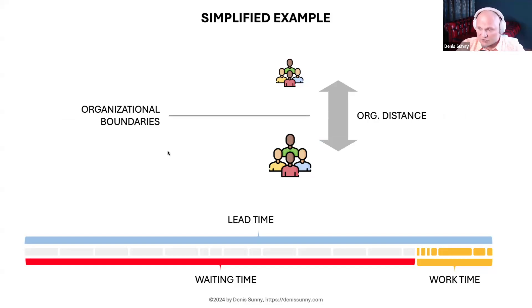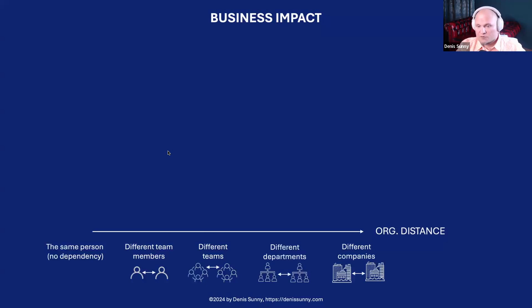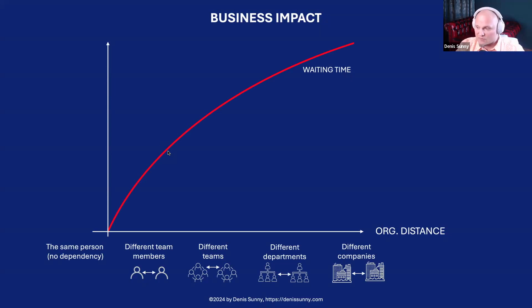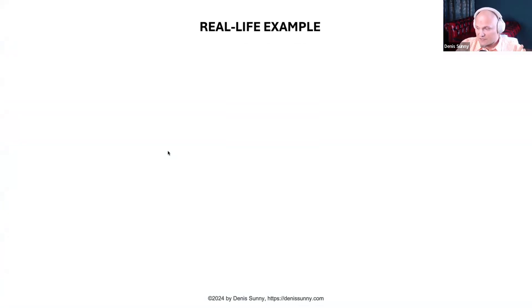If we group all work and waiting time elements, we discover that actual work time is a small fraction while waiting time is huge. When parties belong to different organizational elements — different roles, teams, or departments — there is an organizational distance between them. With increasing organizational distance, waiting time dramatically rises, and speed of value delivery drops.